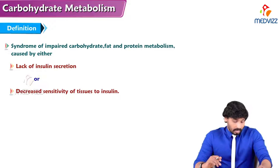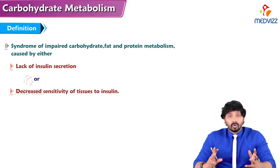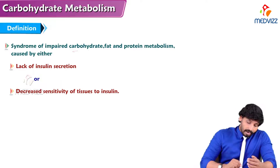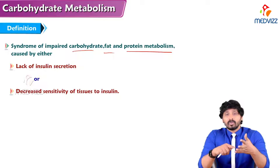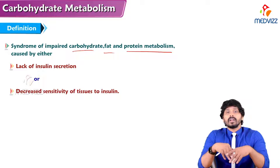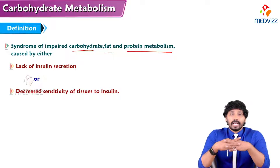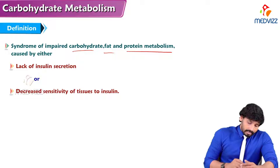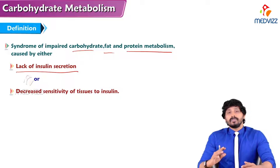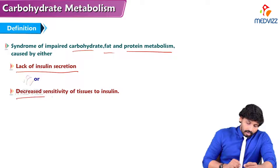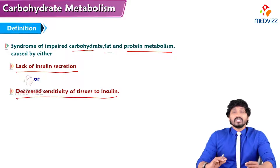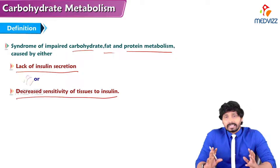What is diabetes mellitus? Diabetes mellitus is a syndrome of impaired carbohydrate, fat, and protein metabolism — all biomolecules together: carbohydrates, lipids, and proteins. Any impaired metabolic defect can lead to diabetes mellitus. Mainly, diabetes mellitus is caused by one of two reasons: lack of insulin secretion, or decreased sensitivity of tissues to insulin — also known as insulin resistance.